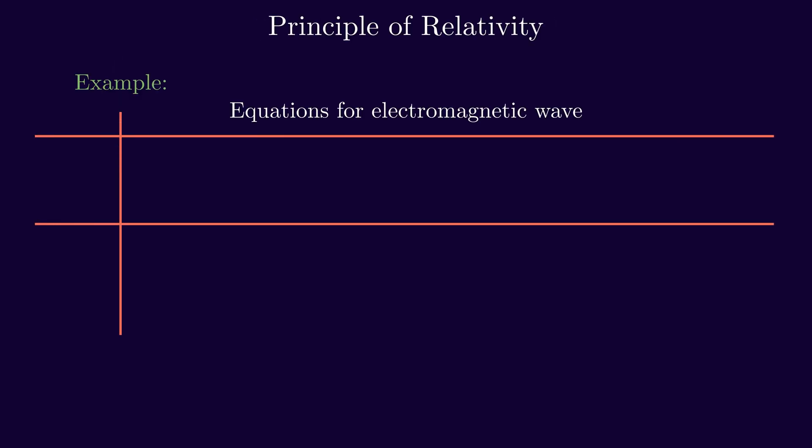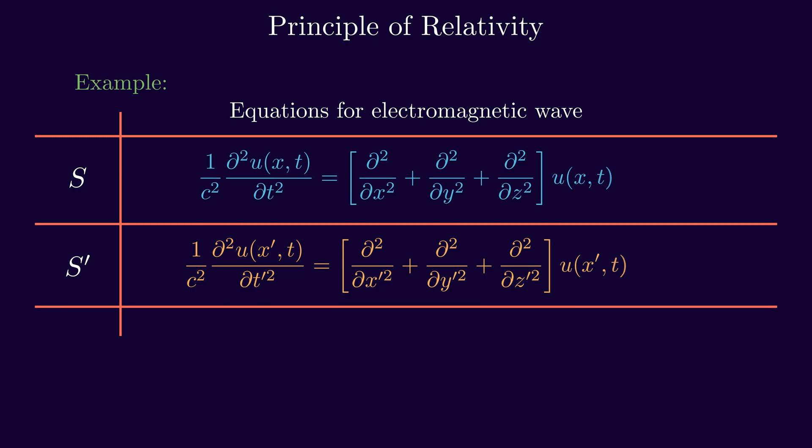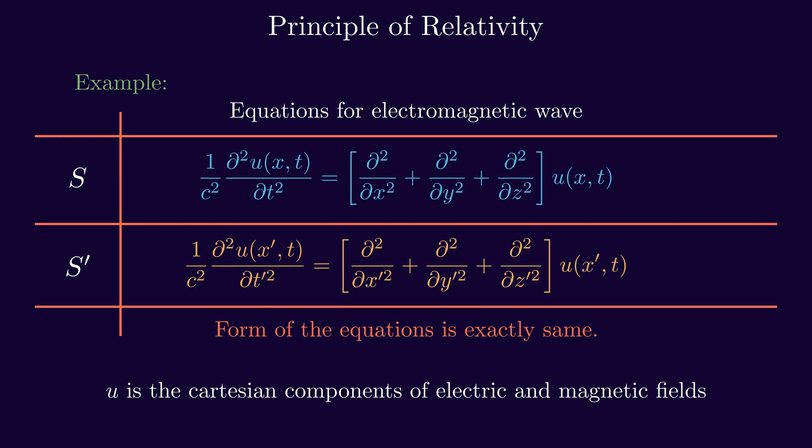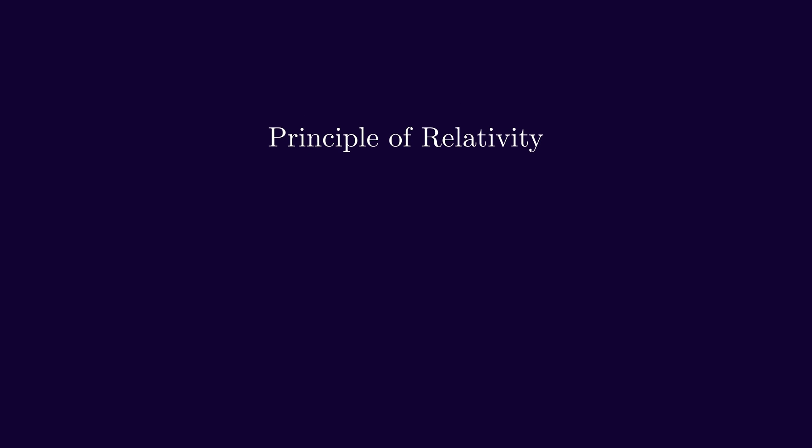The principle of relativity states that the laws of physics are identical in all inertial frames. Einstein combined the principle of relativity with the universal speed limit to create the special theory of relativity, which is needed to understand why photons have momentum despite having no mass.